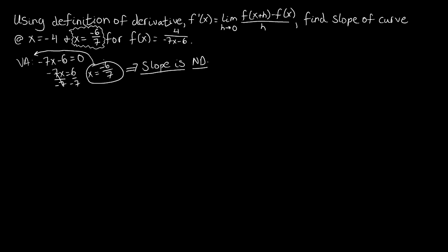Now that we've taken care of that, we look at the other x value: x equals negative 4. There's no vertical asymptote there — the only vertical asymptote is at negative 6 over 7. So we're going to find the derivative at negative 4 using the limit definition. We have f prime of negative 4 equals the limit as h approaches 0 of f of negative 4 plus h minus f of negative 4, all over h.